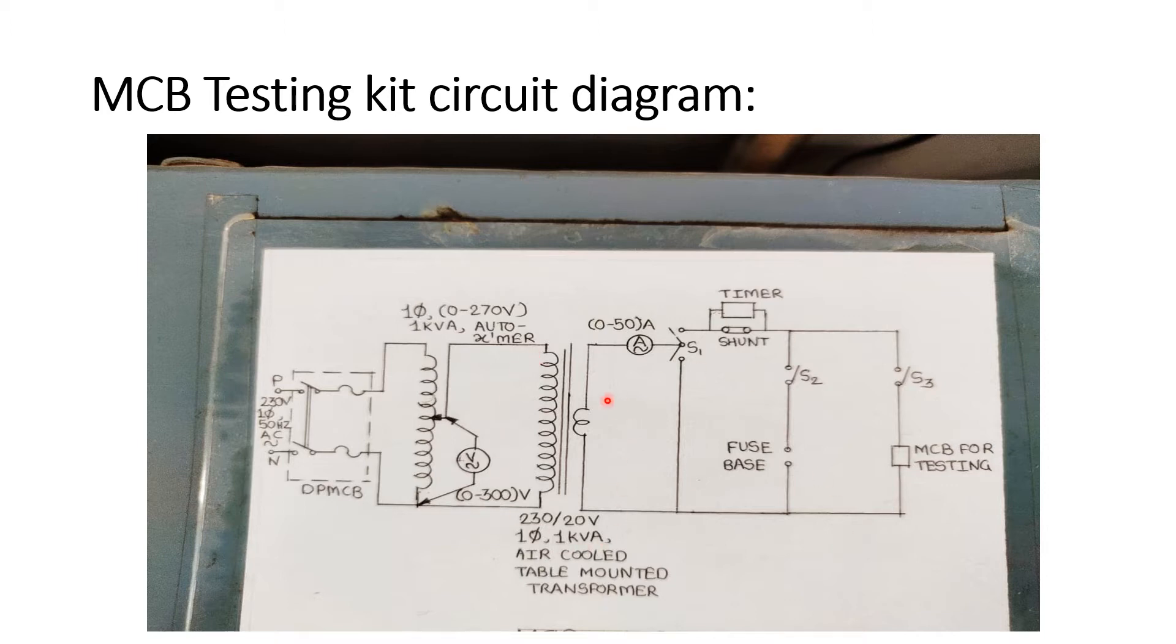So here one transformer is there which is available inside that particular kit. And on the secondary of that particular transformer we are having different switches. So as I shown you S1, S2 and S3. So you are able to conduct a short circuit test just by pressing S1 on. If you want to perform fuse test then with the help of this second switch you will be able to carry out fuse test. But as our interest is in testing MCB today we are going to operate only switch number three that is S3.